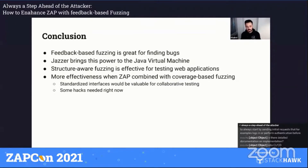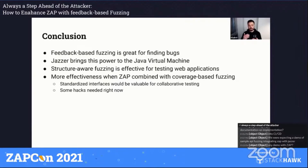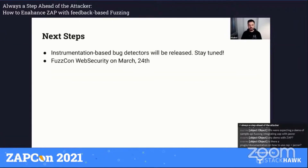This brings me to the point that we as a community should keep in mind that we have developed really great dynamic analysis tools that can work collaboratively with each other. We should think about how to have standard interfaces so that these tools can easily work with each other and benefit from each other's strengths. As next steps from our side, we will be releasing our instrumentation-based bug detectors, and we hope the community will contribute to having really powerful bug detectors for web application vulnerabilities. Stay tuned for that.